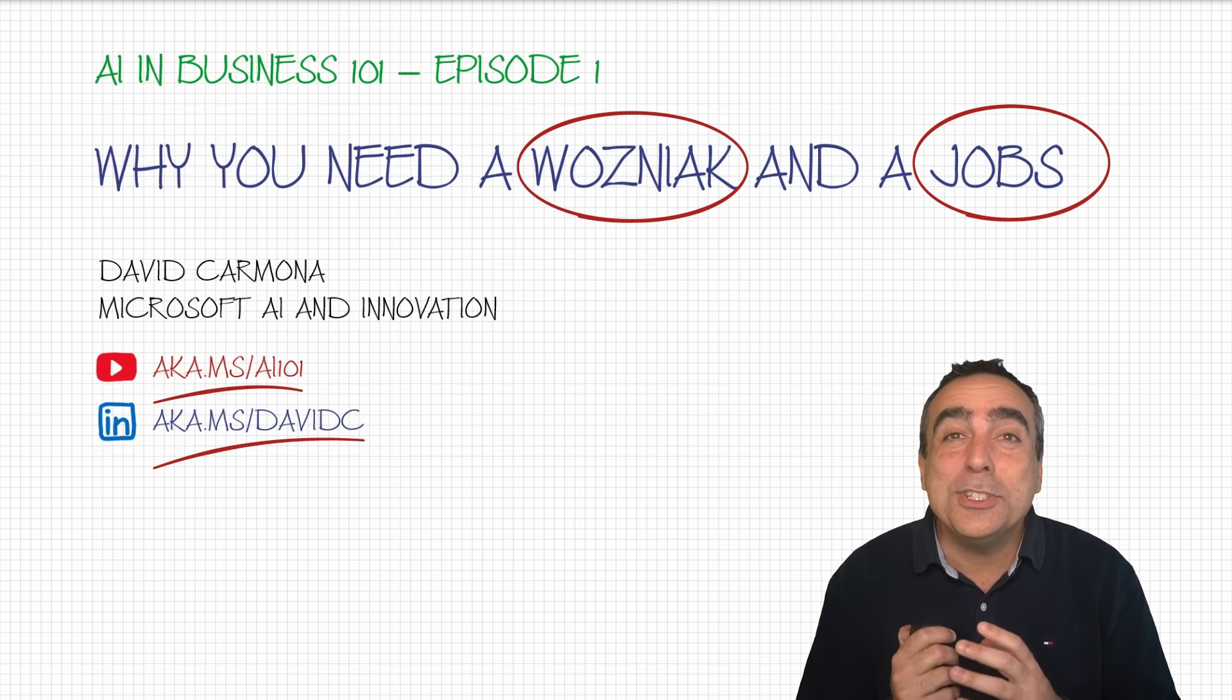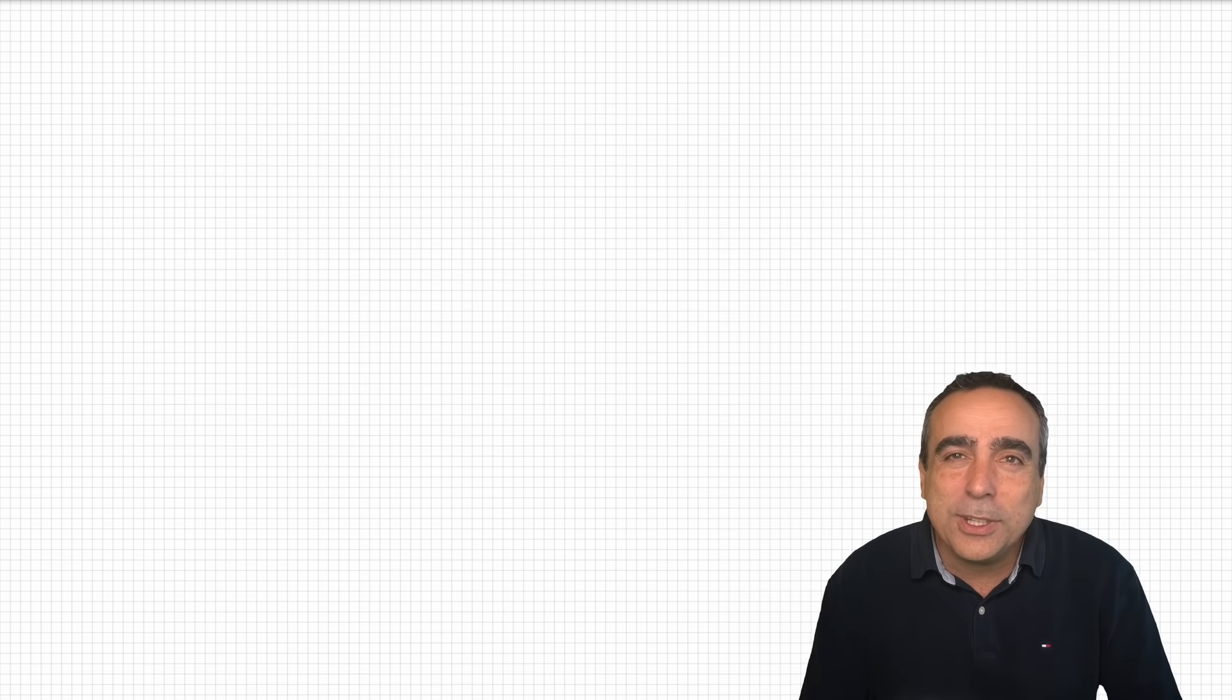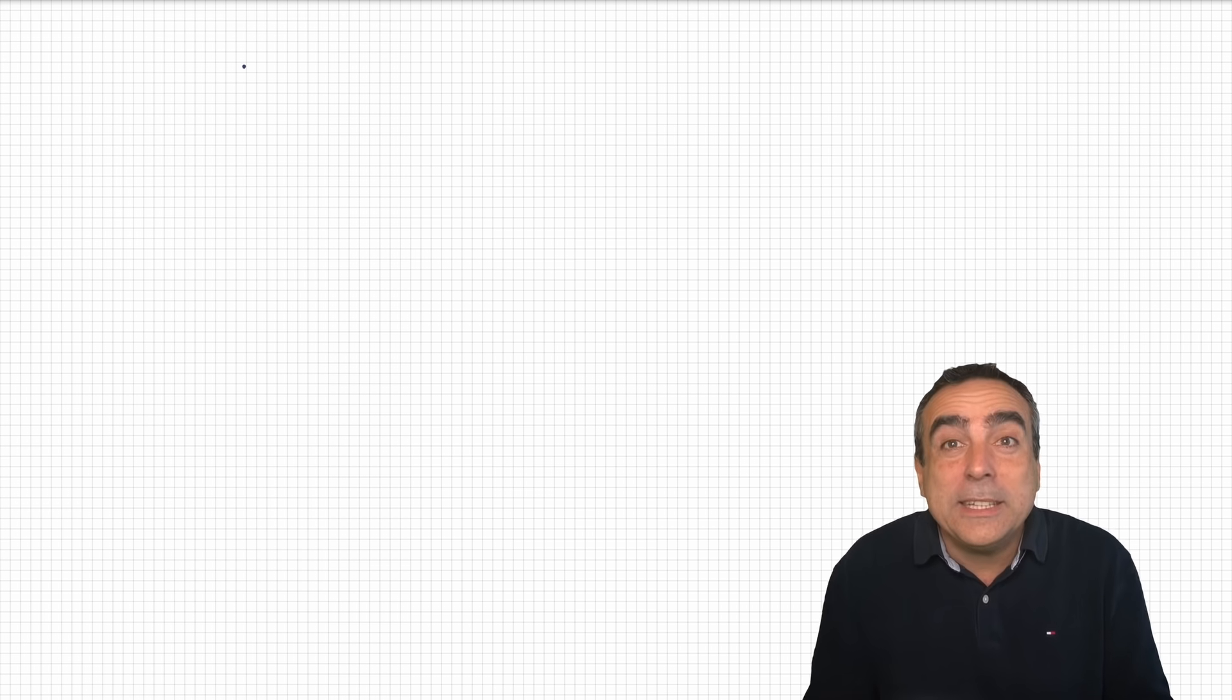Wozniak versus Jobs. What is really that question about? There are usually two types of organizations when they are embracing AI. You will find one type, which is the Wozniak type. Wozniak, as you remember, was the technical brain behind Apple.